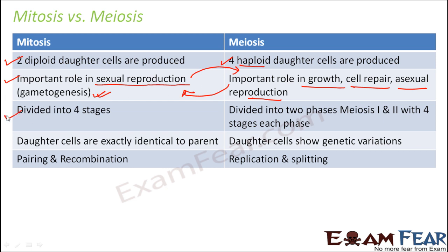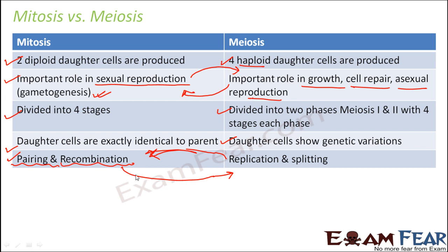Mitosis is divided into four stages: prophase, metaphase, anaphase, and telophase. Whereas meiosis is divided into two cycles — meiosis I and meiosis II — and each cycle has four stages. In mitosis, the daughter cells are exactly identical to the parent, whereas in meiosis, daughter cells show genetic variations. In mitosis, the concept is replication and splitting — DNA gets replicated and split to daughter cells. In meiosis, it is pairing and recombination, so crossing over can take place and genetic variations arise.